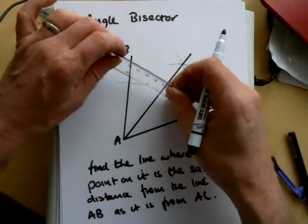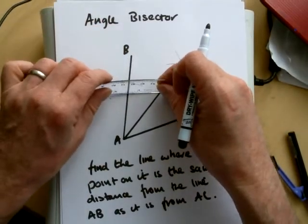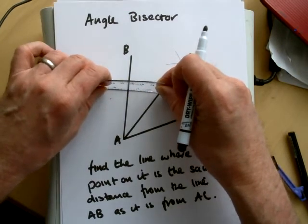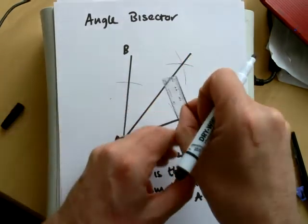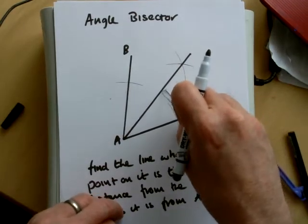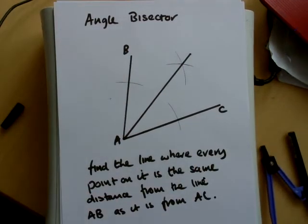Now if I was to take a point and measure it to the closest point this way, then that way it would be the same. And also if we were to measure the angles, because we're saying it's an angle bisector, perhaps that would be a better way of illustrating this.